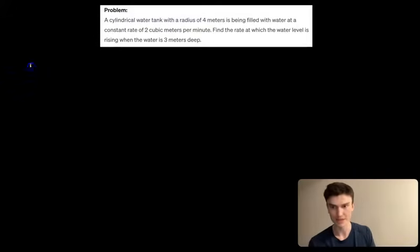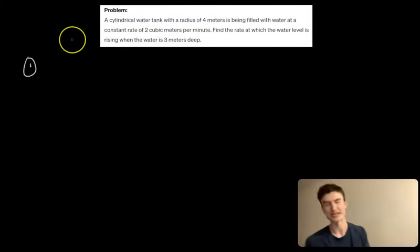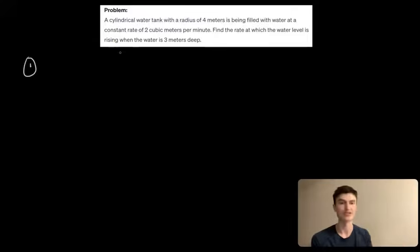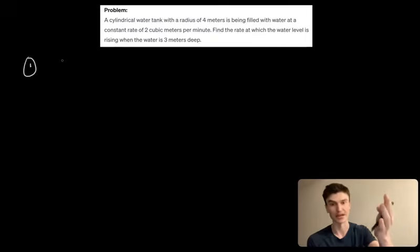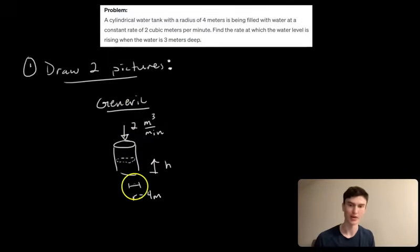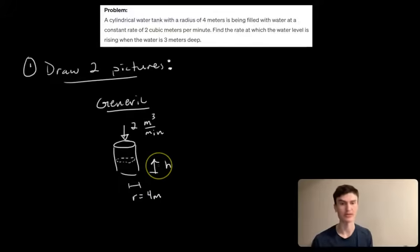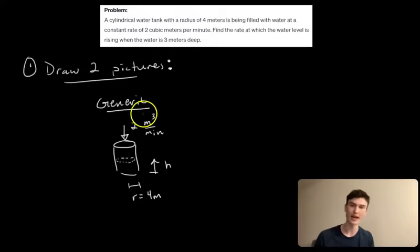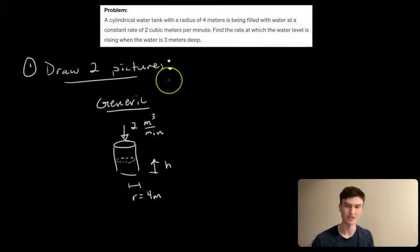The first step in solving any related rates problem is to draw two pictures. The first is a generic picture that is true at all moments of time for the situation given. Here the cylinder has a radius of 4 meters, which is constant, and a height h which changes with time. Water is flowing in at 2 meters cubed per minute.